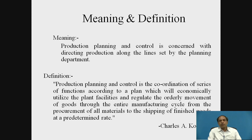What is the meaning of production planning and control? It is concerned with directing production along the lines set by the planning department. Production planning and control is the coordination of a series of functions according to a plan which will economically utilize the planned facilities and regulate the orderly movement of goods through the entire manufacturing cycle — from procurement of all material to shipping of finished goods at a predetermined rate.